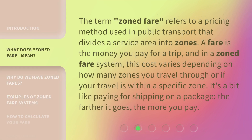The term zoned fare refers to a pricing method used in public transport that divides a service area into zones. A fare is the money you pay for a trip, and in a zoned fare system, this cost varies depending on how many zones you travel through or if your travel is within a specific zone. It's a bit like paying for shipping on a package — the farther it goes, the more you pay.